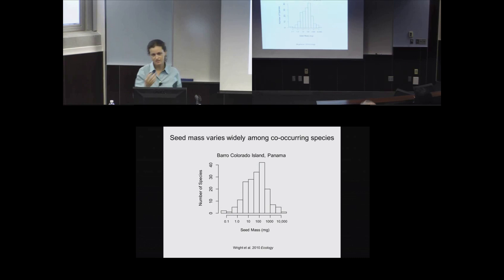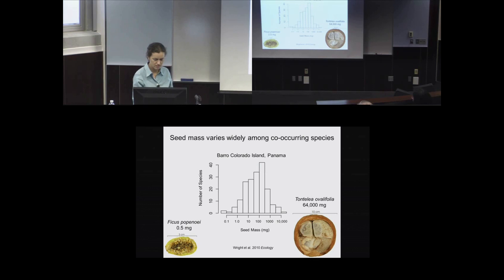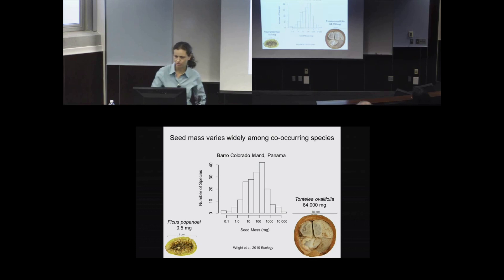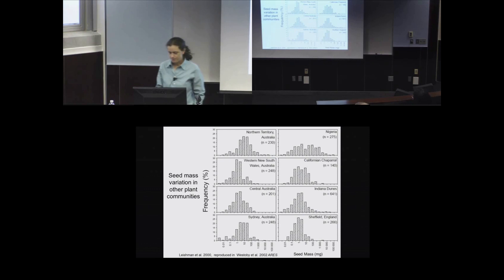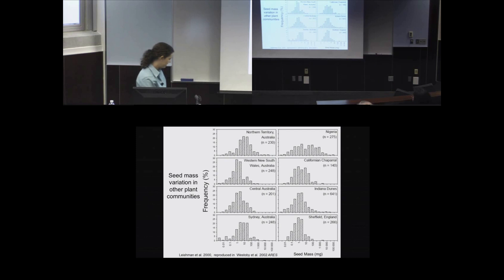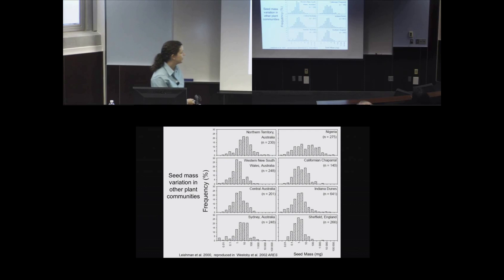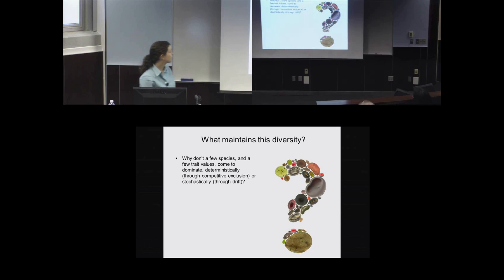This histogram shows the number of species with different sized seeds among woody plant species — trees and woody lianas — ranging in seed mass between less than a tenth of a milligram to more than 10 grams. The largest seeds here are from Tantalea ovalifolia, a liana with seeds a couple centimeters across, while the smallest are fig seeds. This pattern of wide variation in seed mass within communities is not unique to the tropics — four or five orders of magnitude variation within a community is not unusual.